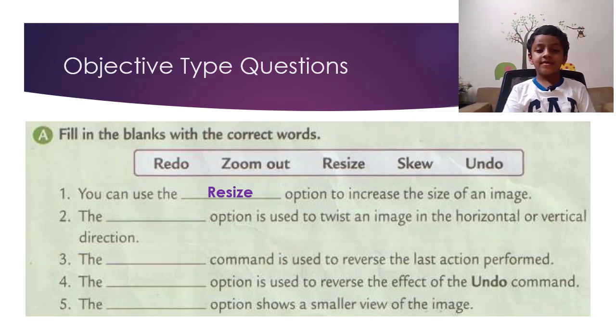The dash option is used to twist an image in the horizontal or vertical direction. So the answer is Skew. The dash command is used to reverse the last action performed. So the answer is Undo.